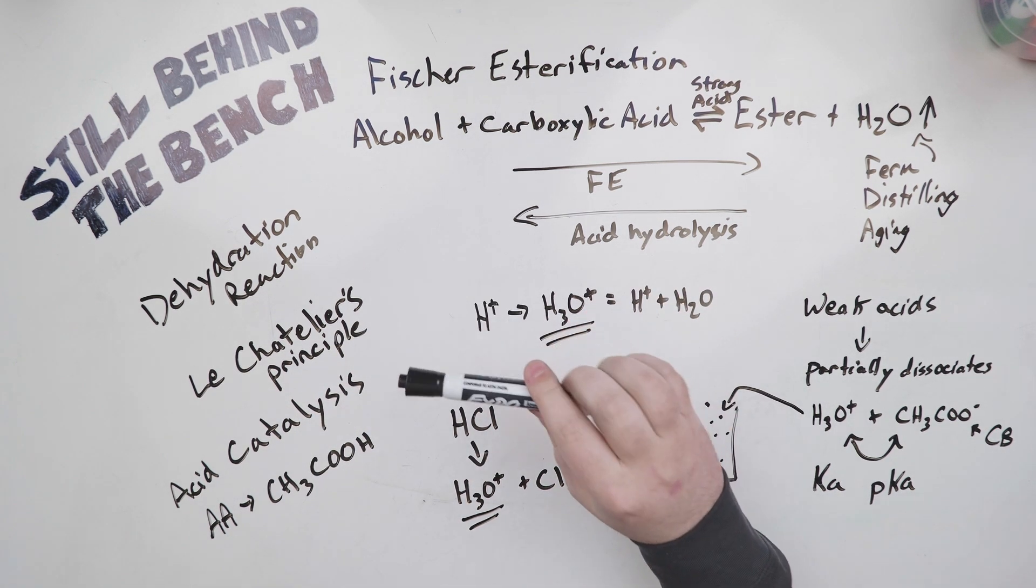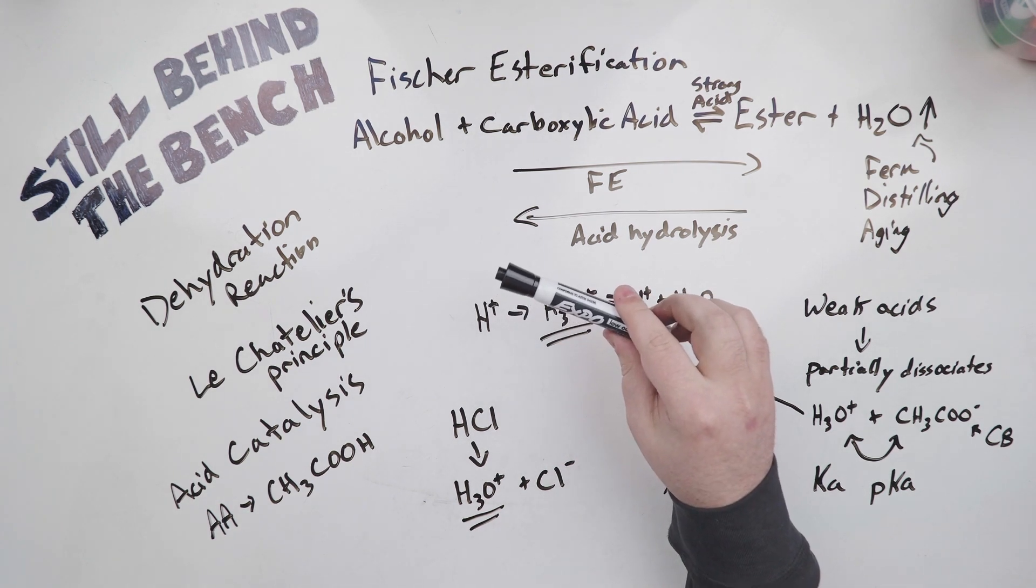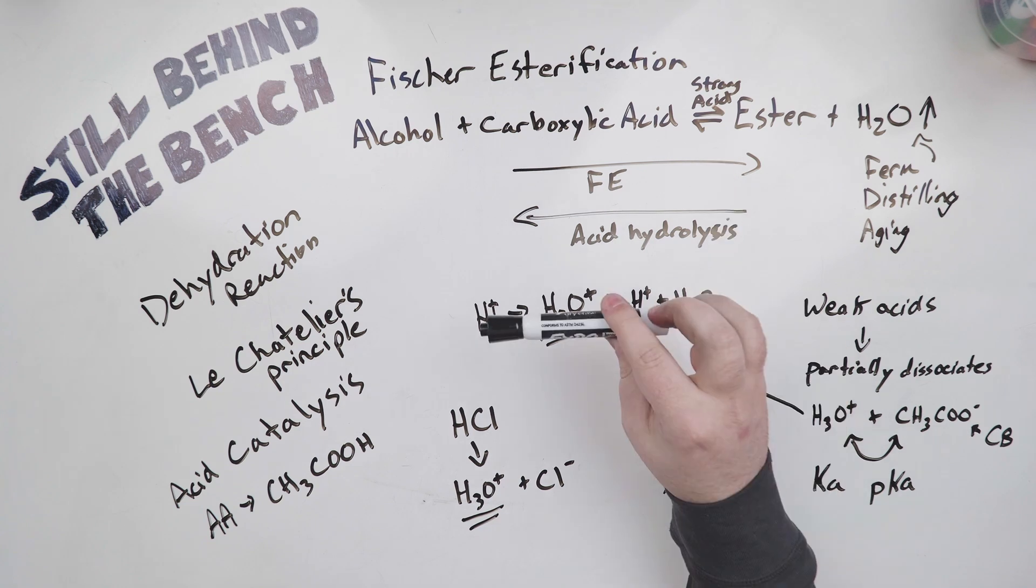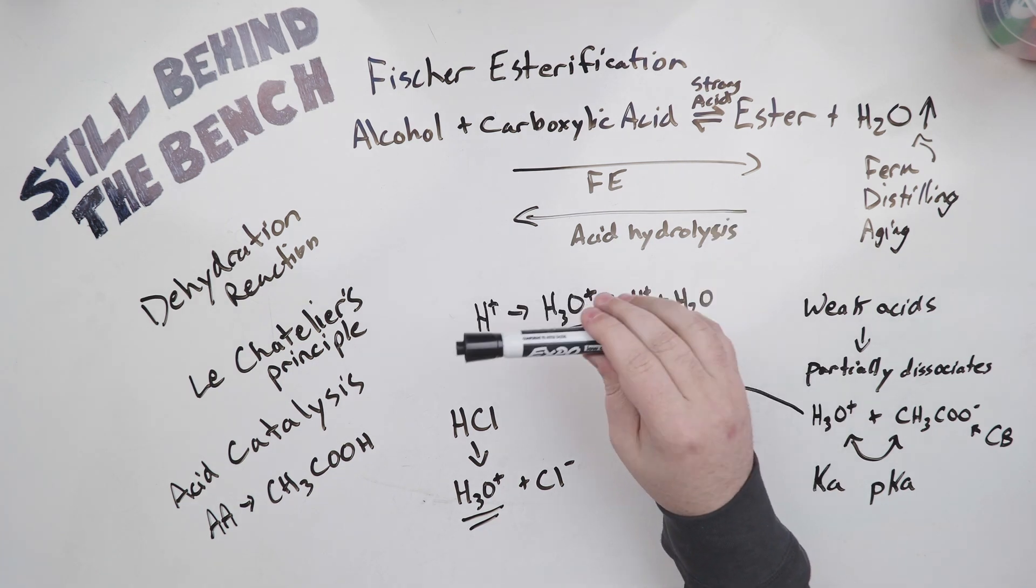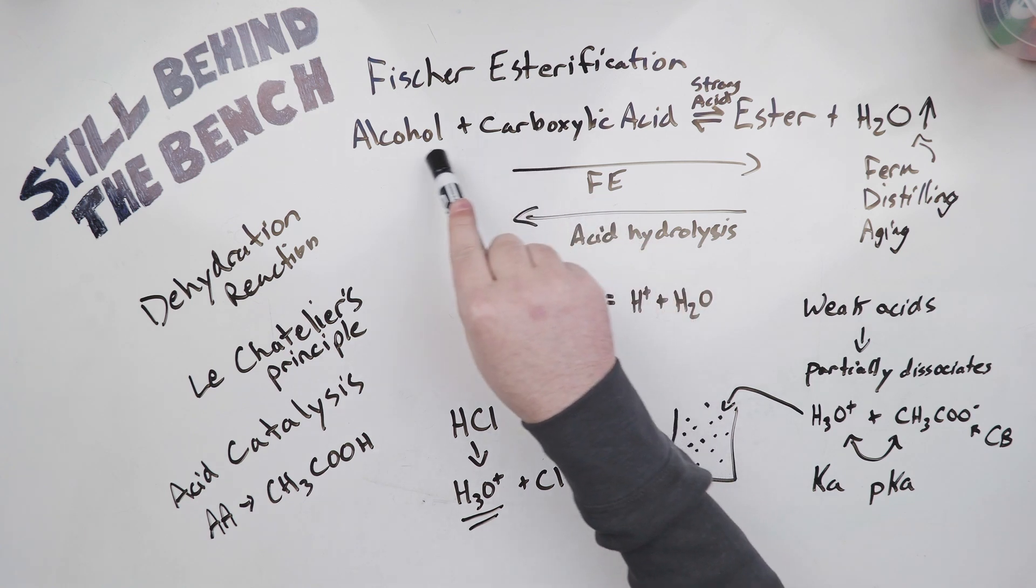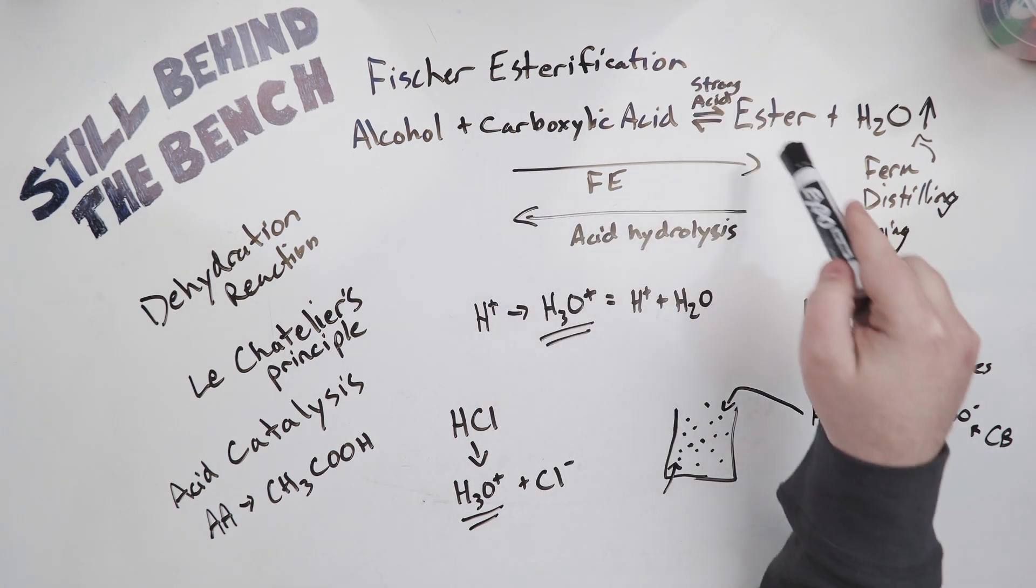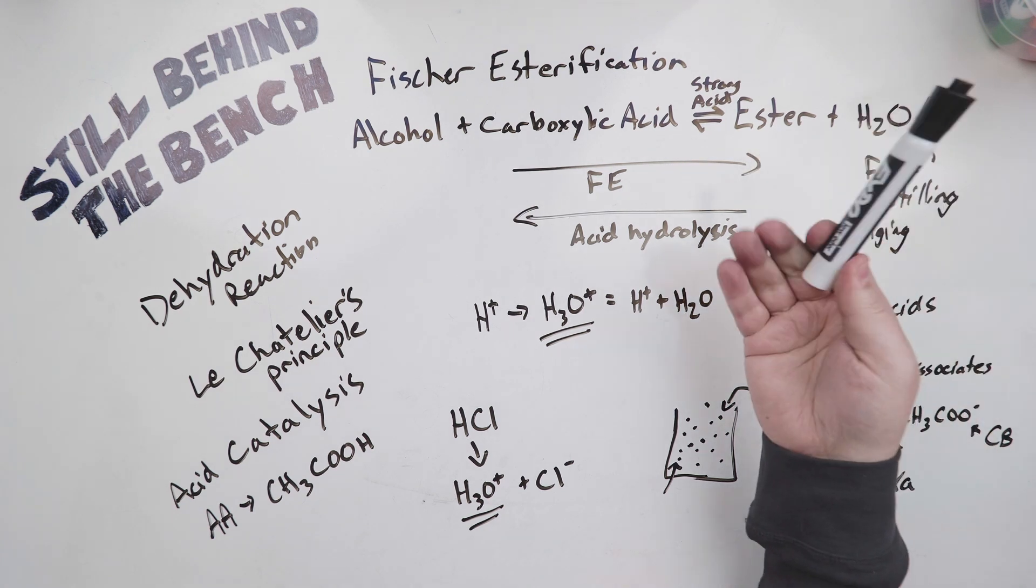This video is about why I don't think Fischer esterification is happening in any meaningful way when fermenting or distilling spirits. Fischer esterification seems like it might be a simple reaction - carboxylic acid reacting with an alcohol in the presence of a strong acid catalyst. You get ester and water as your products.